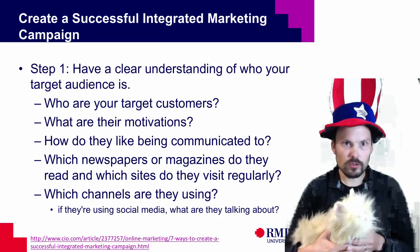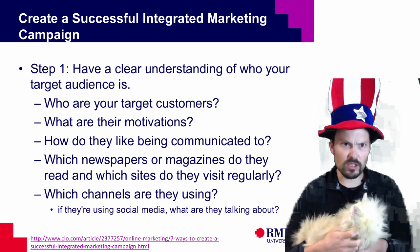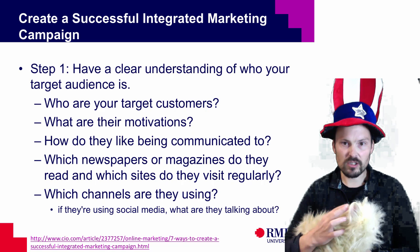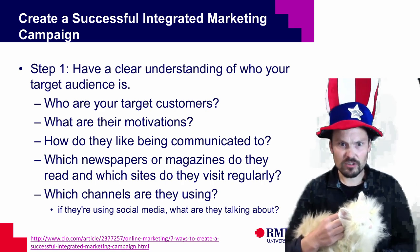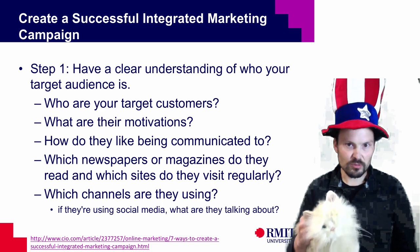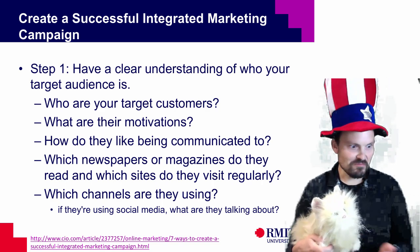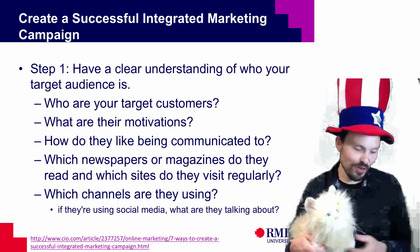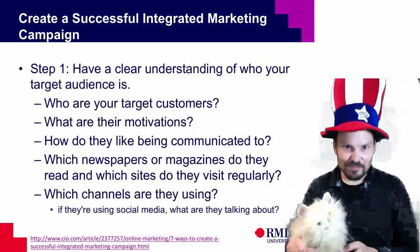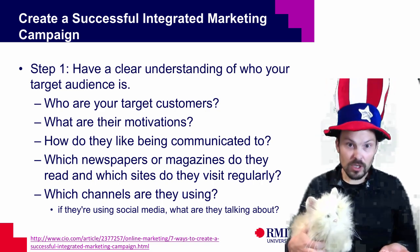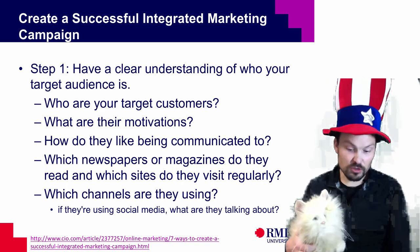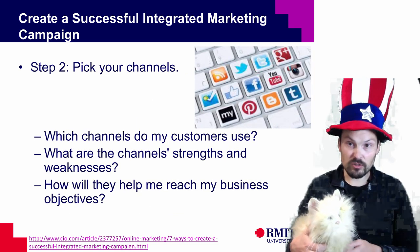This is one of the core readings for today: how to create a successful integrated marketing campaign. Let's go through those seven steps. The first step is to have a clear understanding of who your target audience is — basic first-year marketing: always start with the consumer. My definition of marketing is finding out the needs and wants of the consumer and serving those. You want to know who they are, what motivates them, how they like to be communicated to, and which channels they are using.